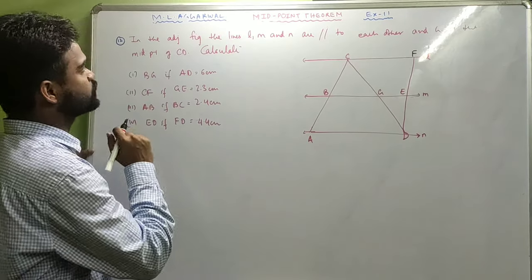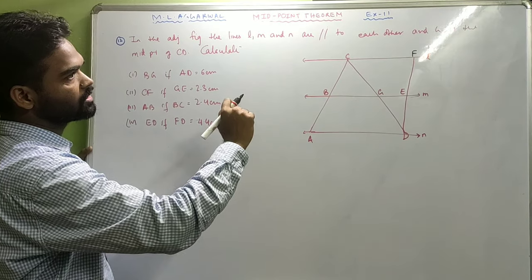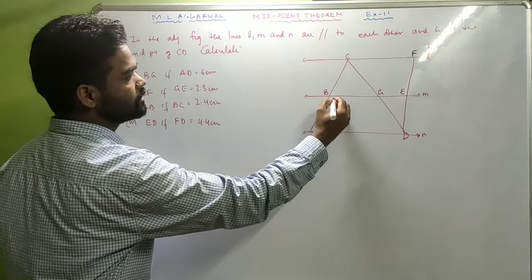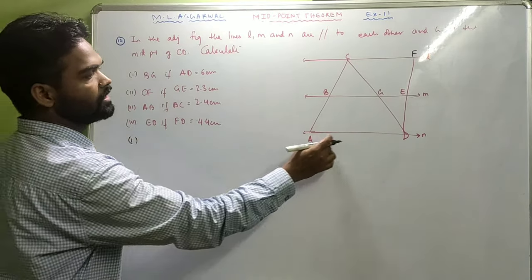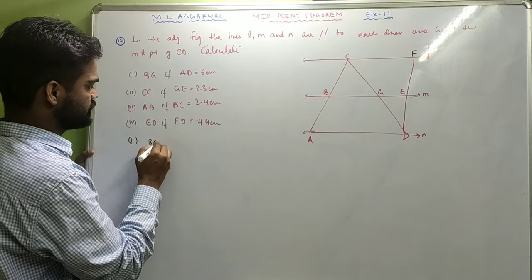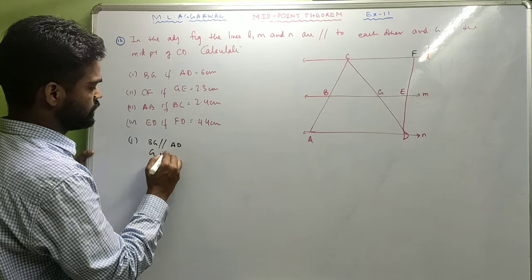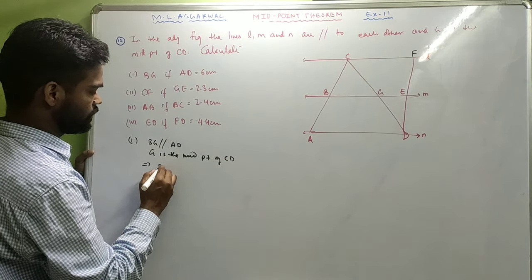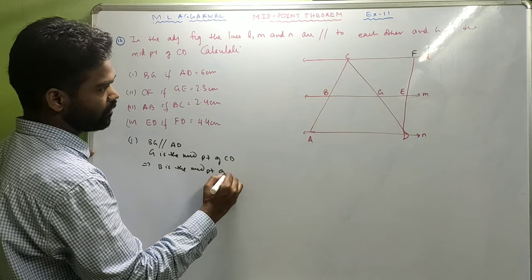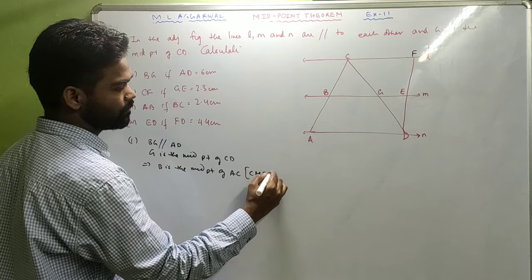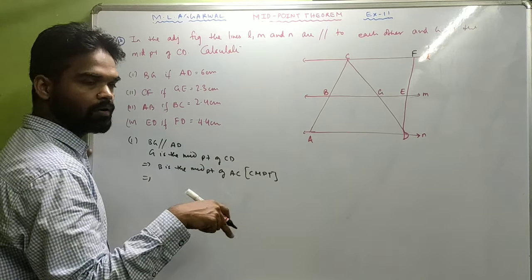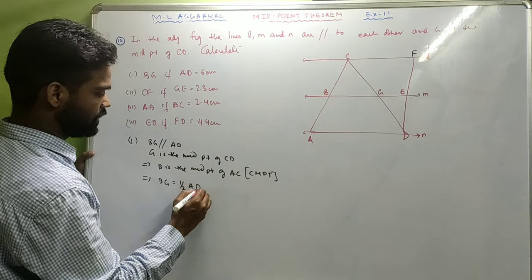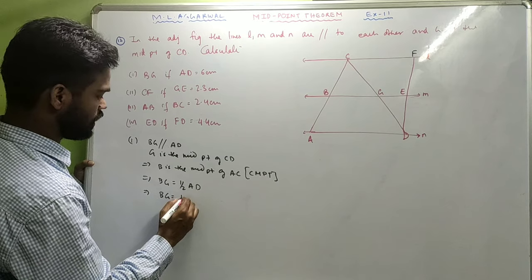Look at the last sum, number 12. Lines L, M, N are parallel to each other and G is the midpoint of CD. Calculate BG if AD equals 6. BG is parallel to AD and G is the midpoint of CD, so by the converse theorem B is the midpoint of AC. Since B and G are midpoints of AC and CD, by the midpoint theorem BG equals half of AD equals half of 6 equals 3.